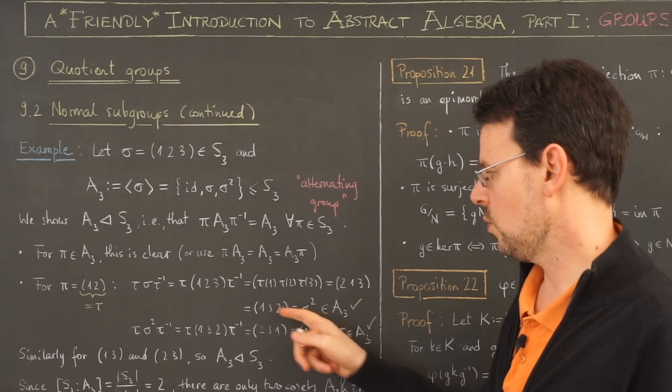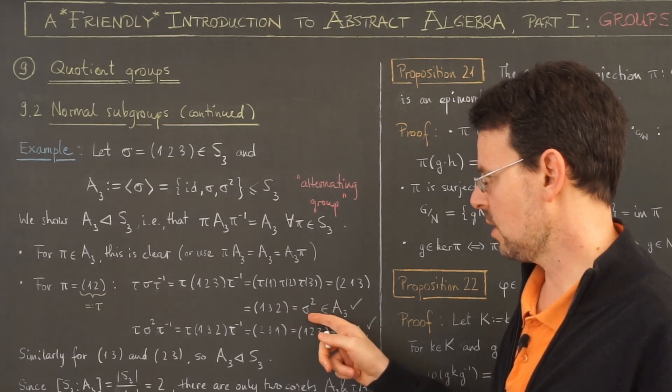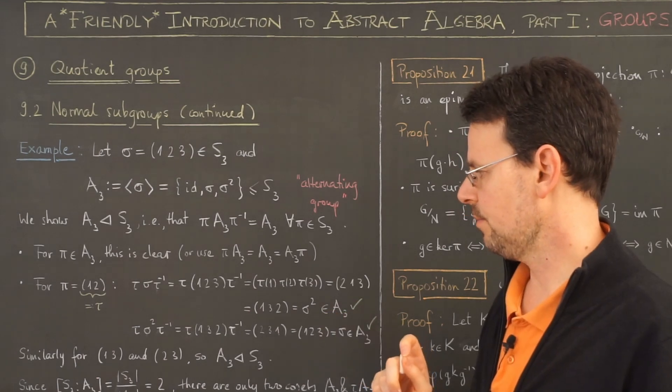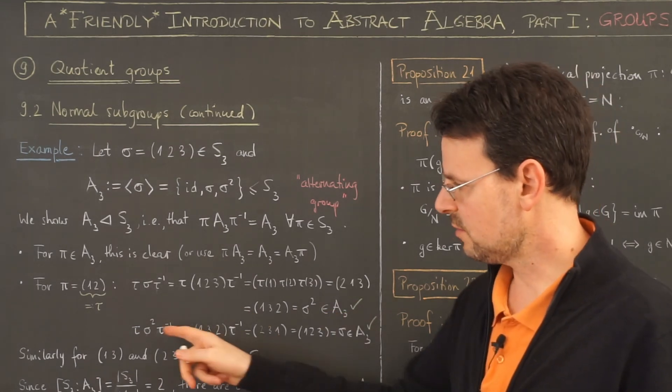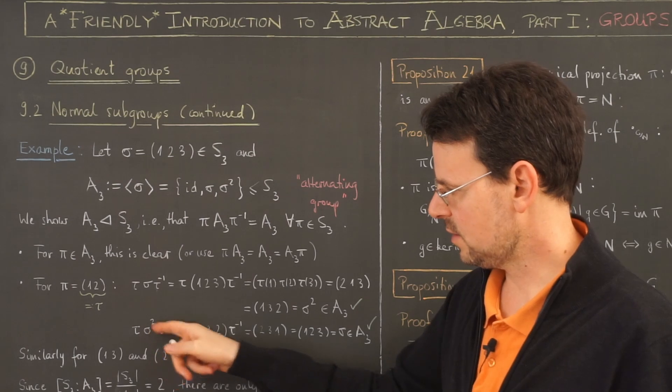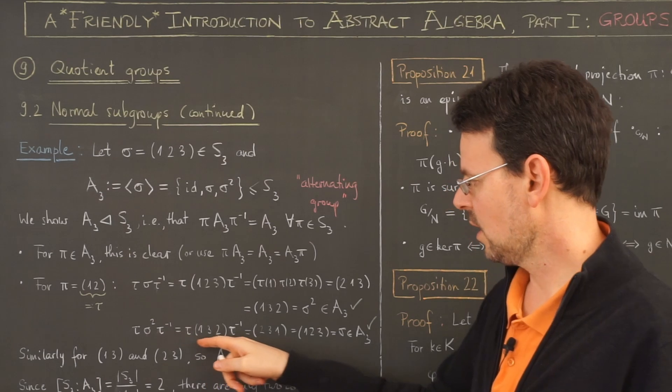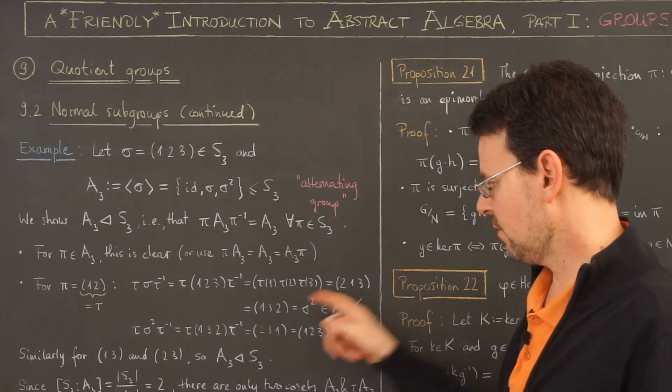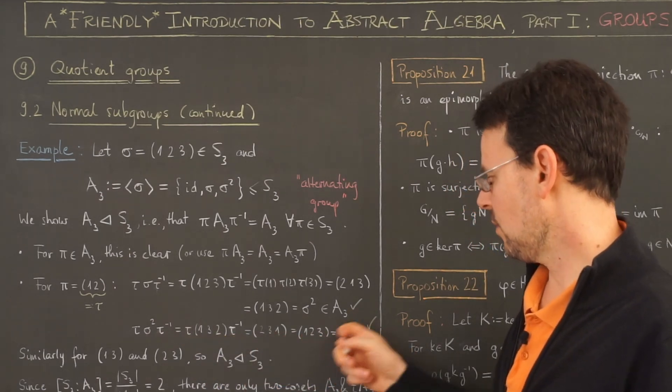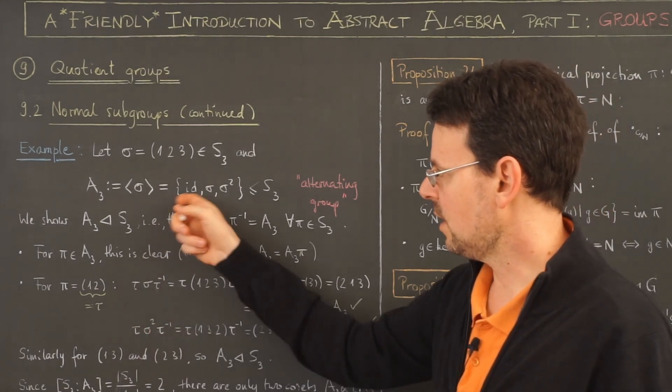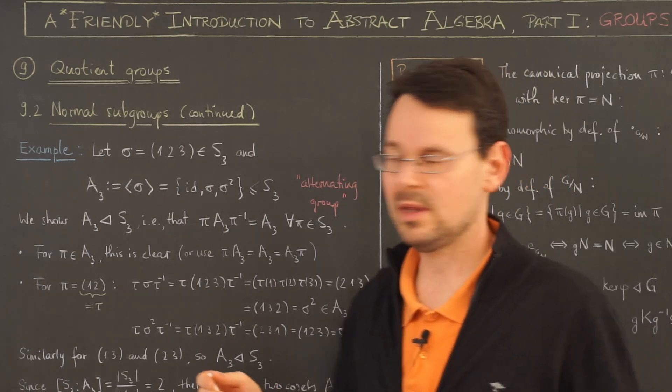So this here is an element of A3, and the same holds if I conjugate sigma squared with tau. So tau sigma squared tau inverse gives me sigma, which is an element of A3, and of course if I conjugate the identity I end up with the identity.